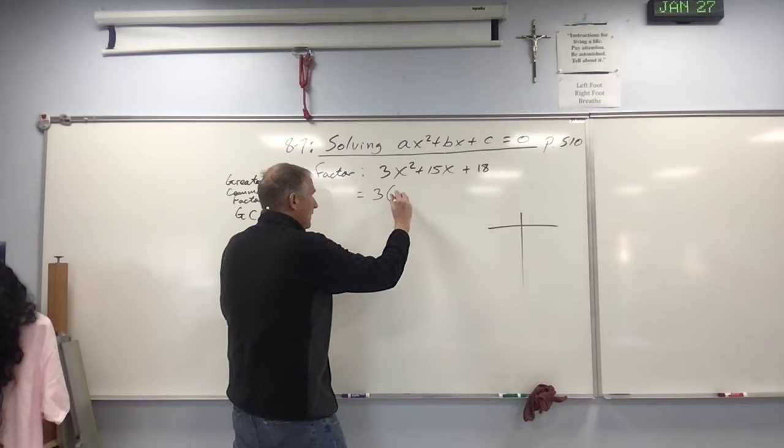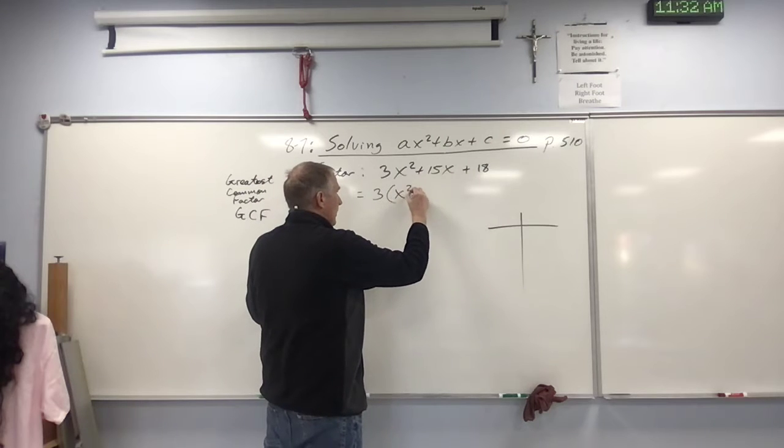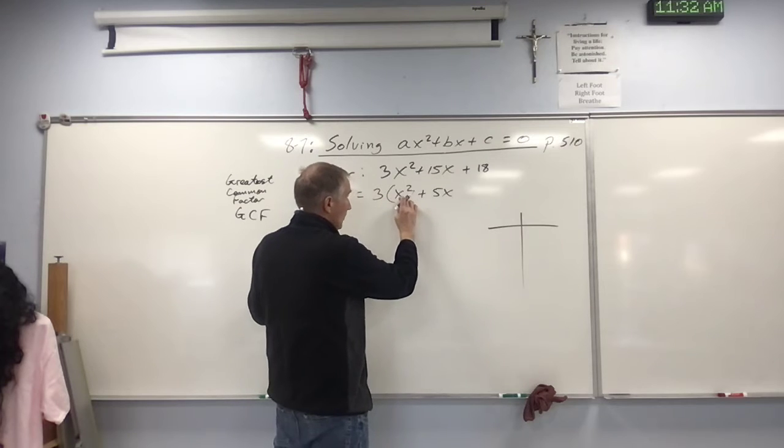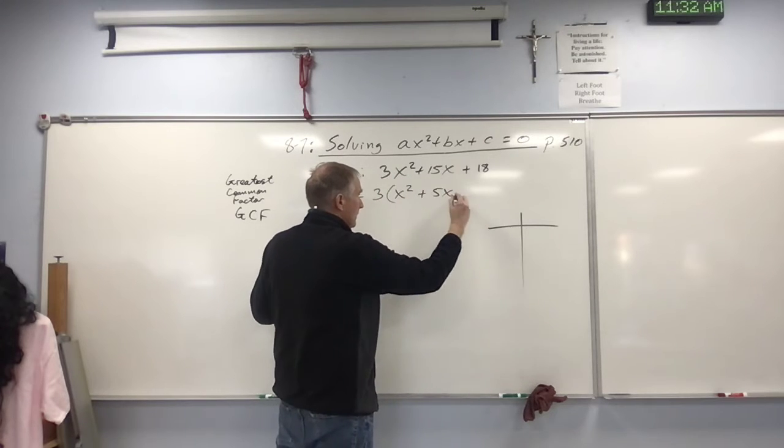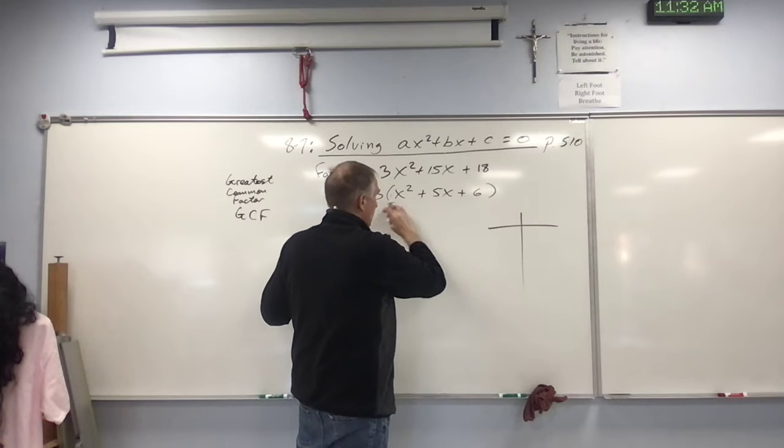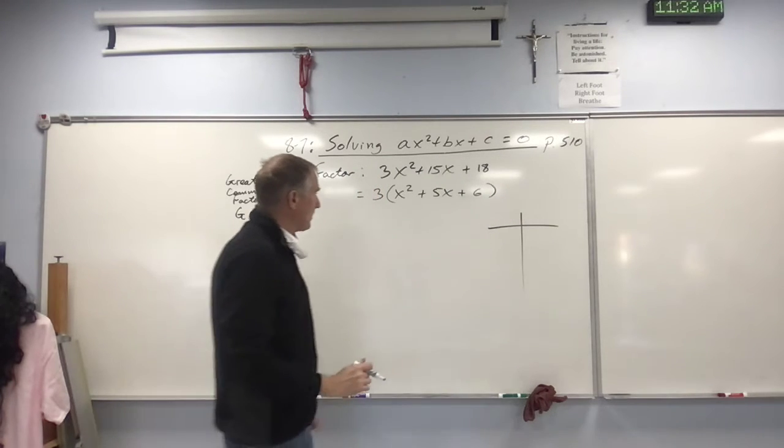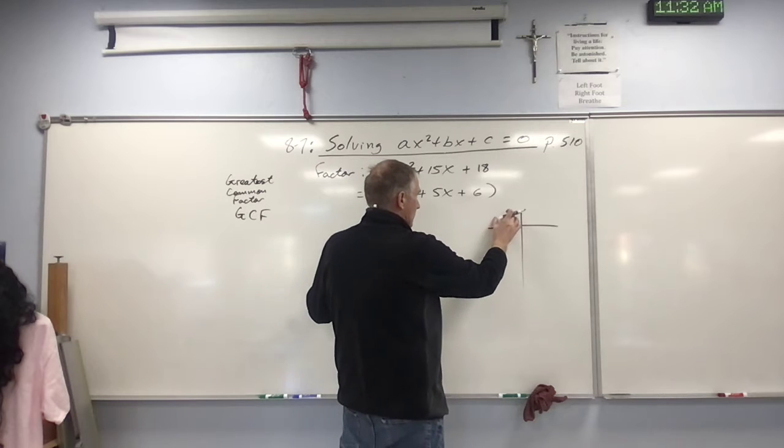I can factor out three to the side. Now it's x squared plus 5x plus 6, because three times one is three, three times five is 15, and three times six is 18. That's so much easier.